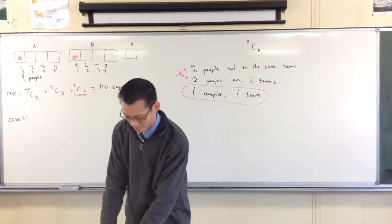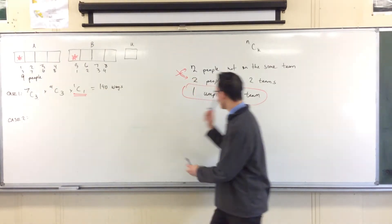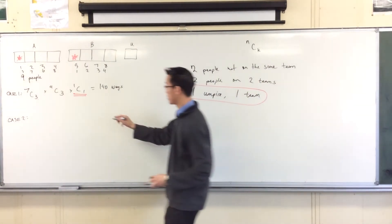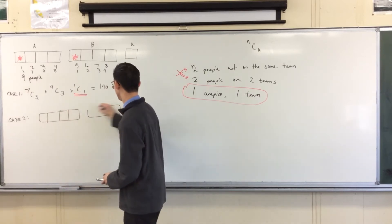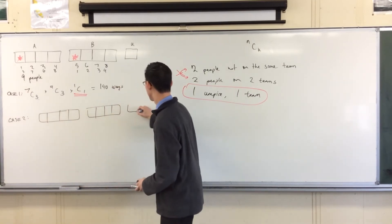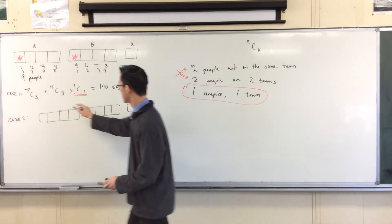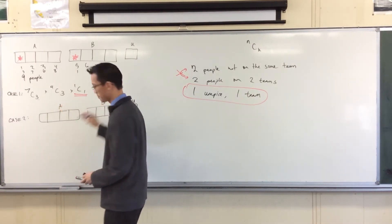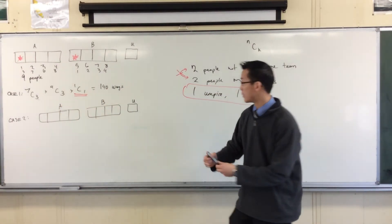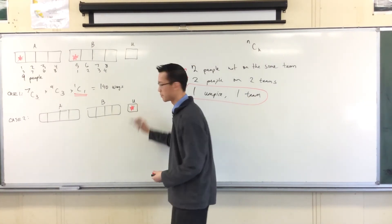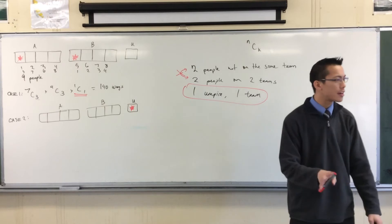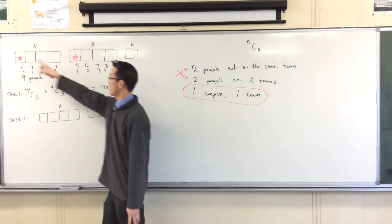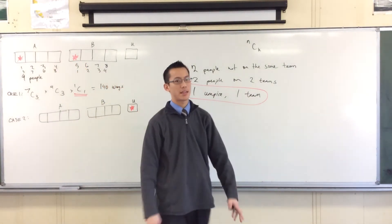Case two is that I'll make one the umpire, and I'll make the other one on one of the teams. Does that make sense? Now, you can think through it. If I make one the umpire, I'm going to draw my boxes again. I'm going to lock him in. So here he is, done. Now, think about that other important player, the asterisk player. How many places can I put him?